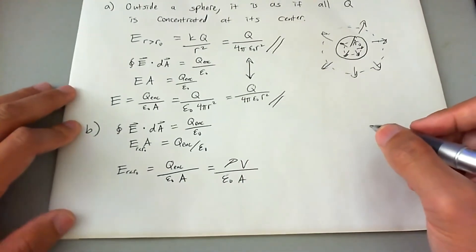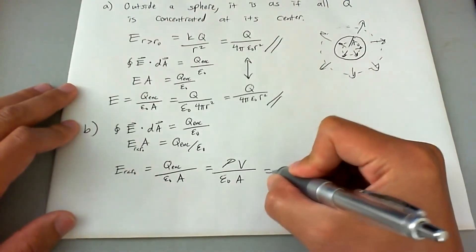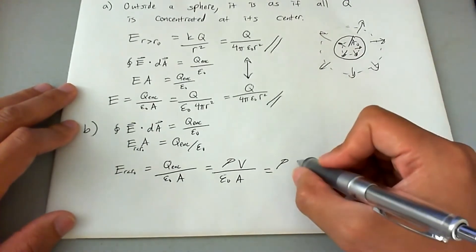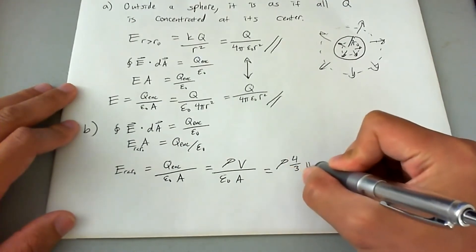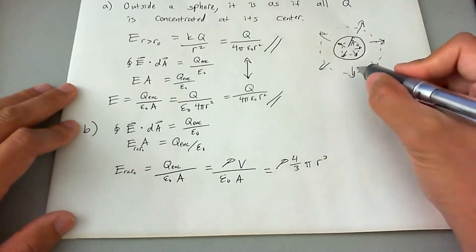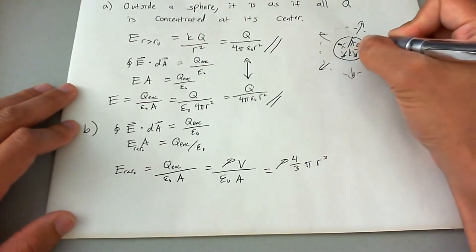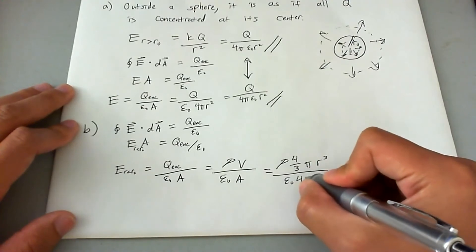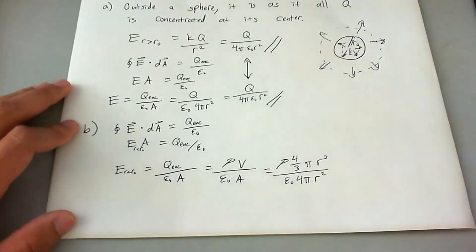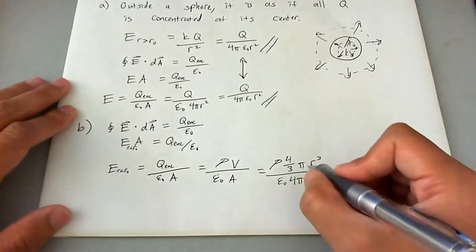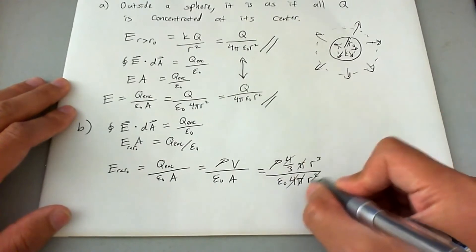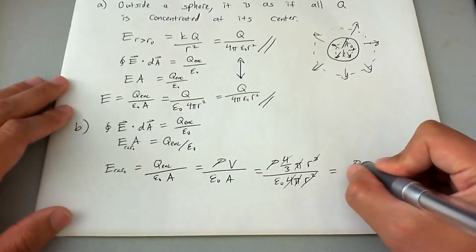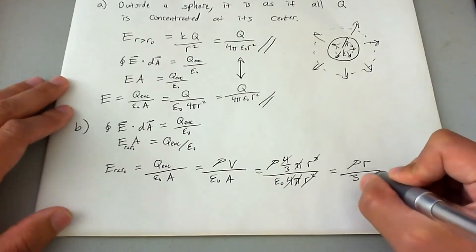And we're going to go ahead and expand it out into appropriate terms. So now we're going to have ρ, which is just a constant. The volume of this Gaussian surface is 4/3 π r cubed. Not r naught, but r because it's the radius of this surface and not the radius of the sphere. And we're going to divide it by epsilon naught times the surface area, which is 4π r squared.